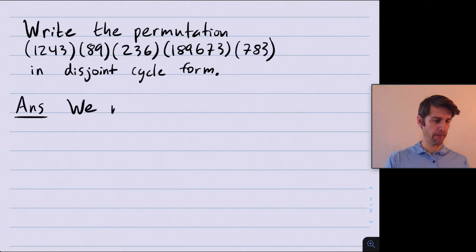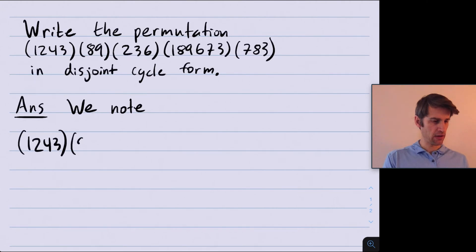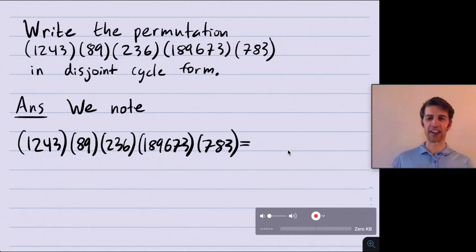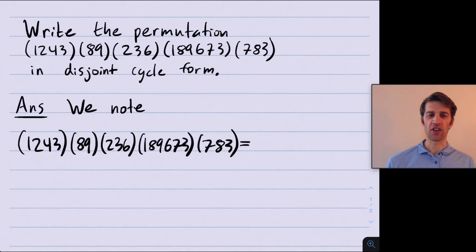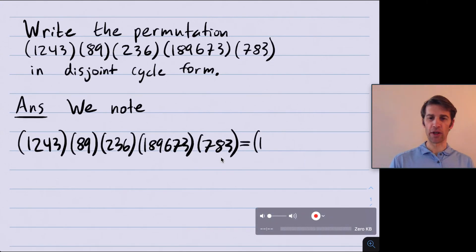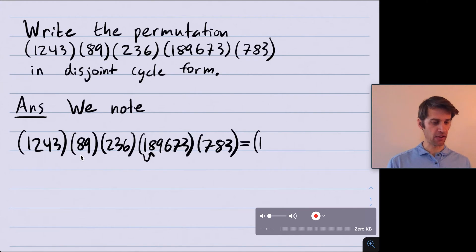So I write down the problem again: (1,2,4,3)(8,9)(2,3,6)(1,8,9,6,7,3)(7,8,3). To write a permutation in disjoint cycle form, first see where 1 goes. (7,8,3) doesn't move 1. The next cycle maps 1 to 8. (2,3,6) doesn't map 8 anywhere. The next cycle maps 8 to 9. And that doesn't map 9 further. So 1 goes to 8 and then to 9 — overall 1 maps to 9. I write down 9 next.